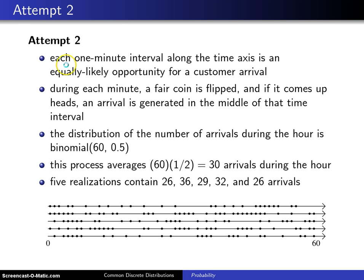On attempt number two, this is much more sophisticated. We're going to divide each one minute interval along the time axis into an equally likely opportunity for a customer arrival. So during each minute, a fair coin will be flipped and if that coin comes up heads, then you generate an arrival in the middle of that time interval.